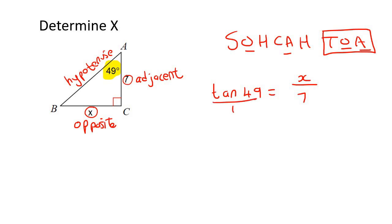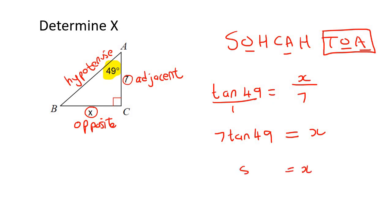So you'd say tan of the angle equals to the opposite, which is x, over the adjacent, which is 7. Then use cross multiplication — you end up with 7 multiplied by tan 49. Type in 7 tan 49 on your calculator, and you should get x equal to 8.05.